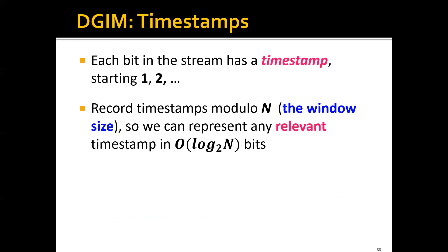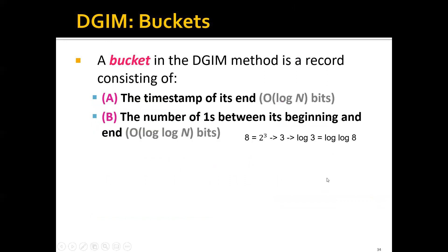In this way, we can represent any relevant timestamp in log M bits. So a bucket in the BGIM method is actually a record consisting of the timestamp of its end, which can be represented in log M bits.